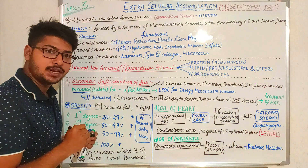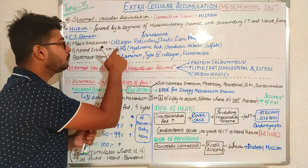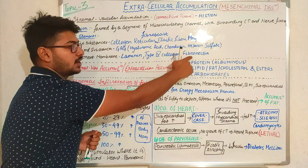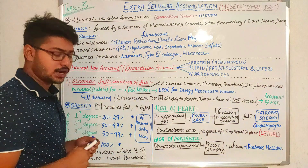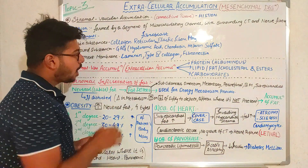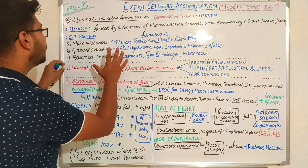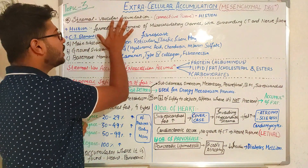The basement membrane is formed by laminin and type 4 collagen fiber, and finally the fibronectin.